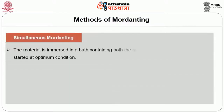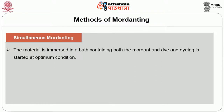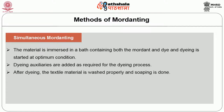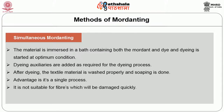In simultaneous mordanting, the material is immersed in a bath containing both mordant and dye and dyeing is started at optimum conditions. Dyeing auxiliaries are added as required. After dyeing, the textile material is washed properly and soaping is done. An advantage is that it is a single process; however, it is not suitable for fibres which will be damaged quickly.